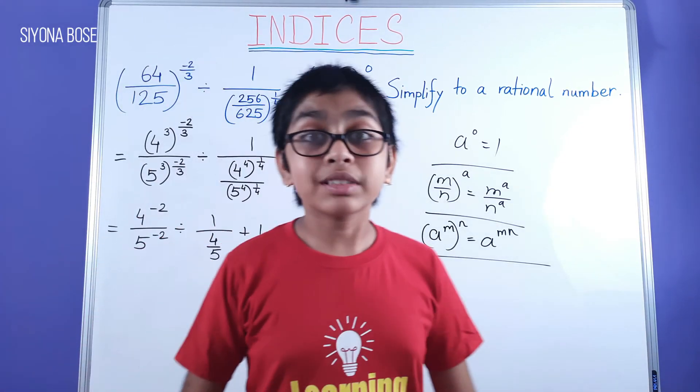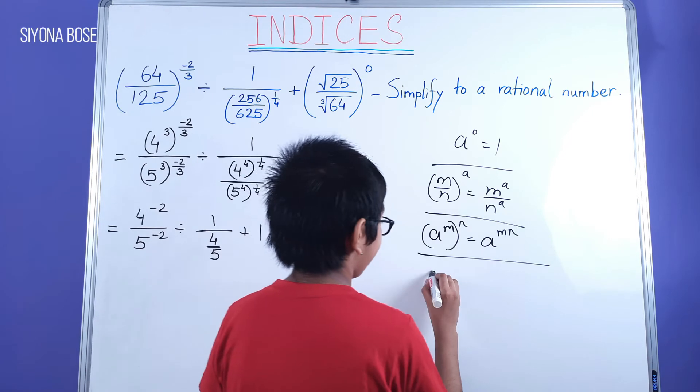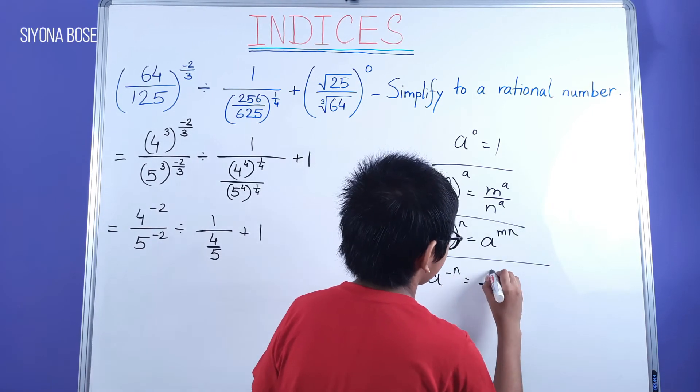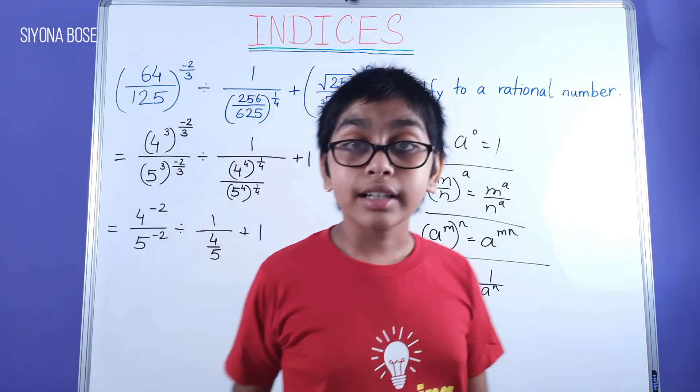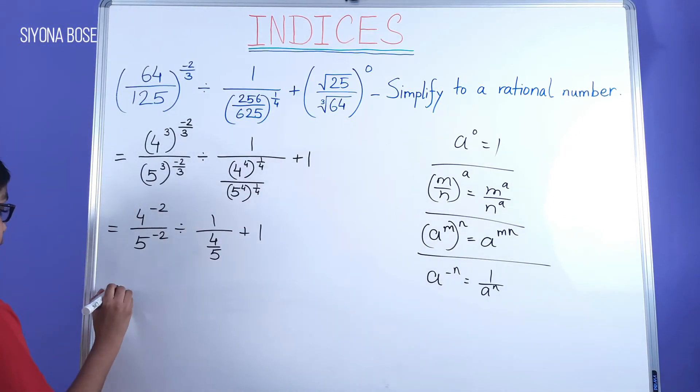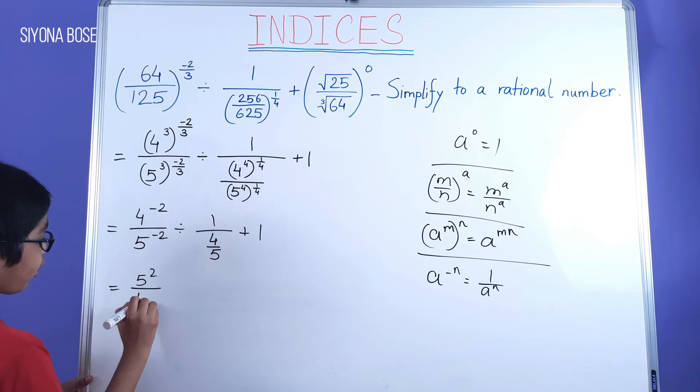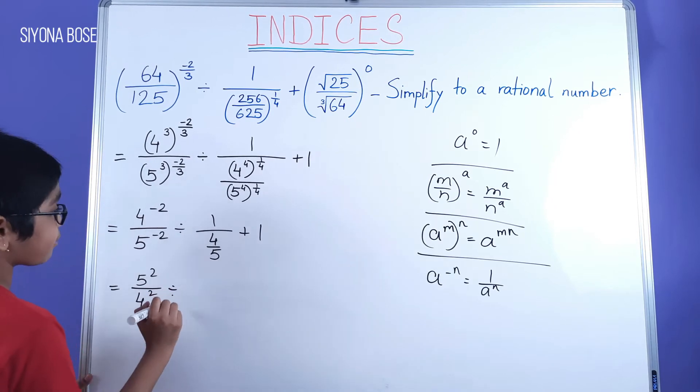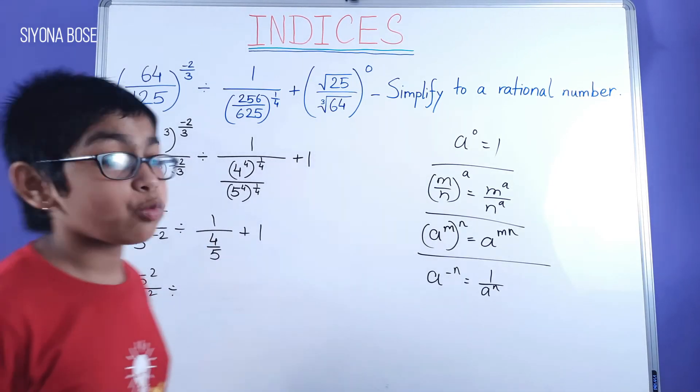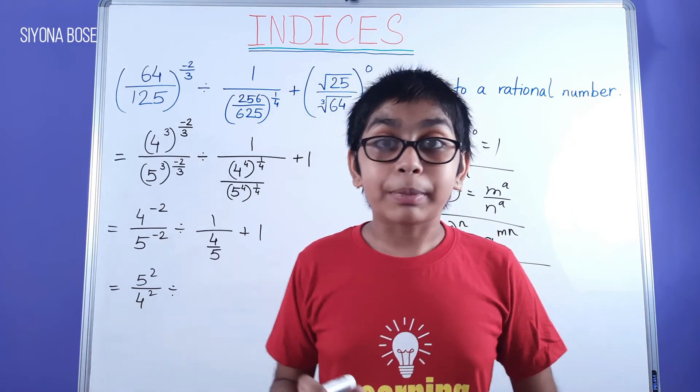Now we know that a to power of minus n is equal to 1 by a to power of n. Here, in this case, then we get 5 squared by 4 squared, divided by 1 divided by 4 by 5.